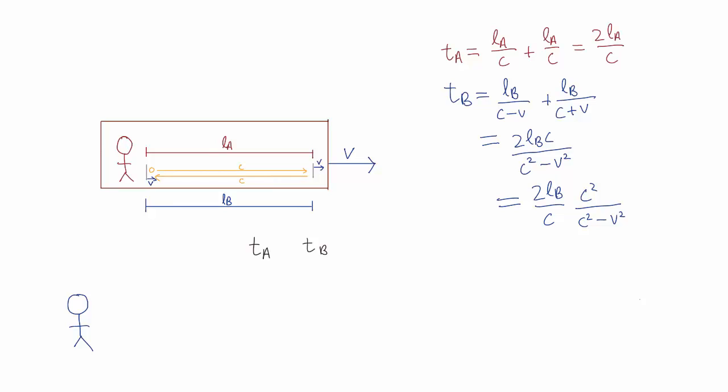So think about it. If Alice's clock is ticking more slowly, and gamma is greater than one, which side of the equation should gamma be on? Pause the video and see if you can guess.